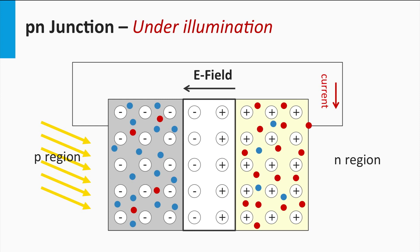If we illuminate the P-N junction, the density of the minority charge carriers is increased by many orders of magnitude, and as a result the drift becomes dominant and the P-N junction generates a large current.